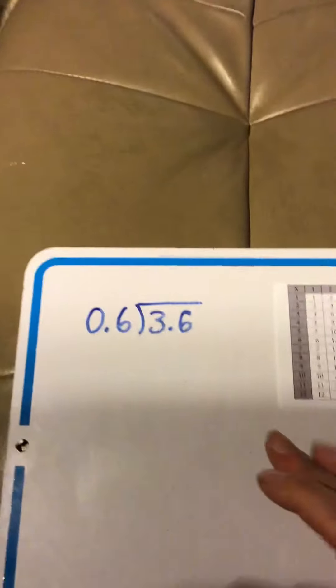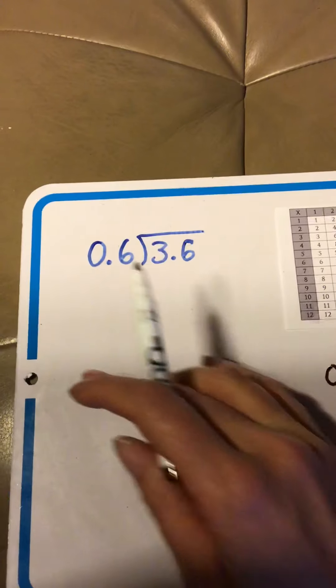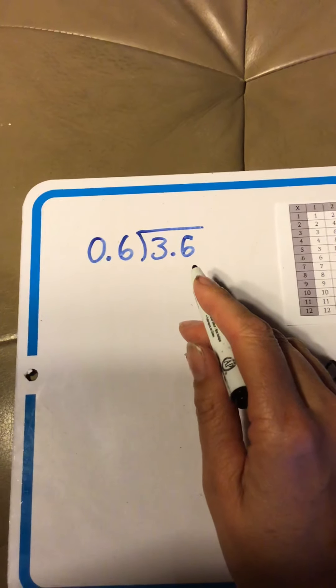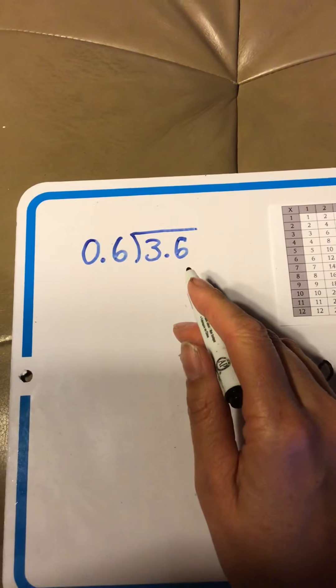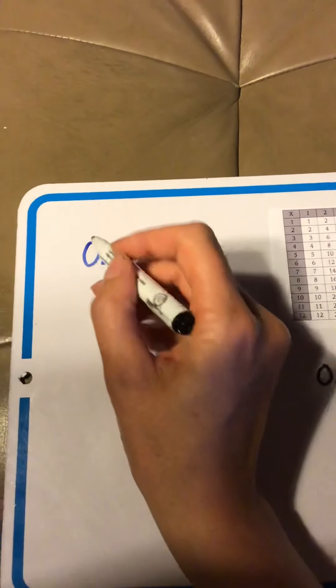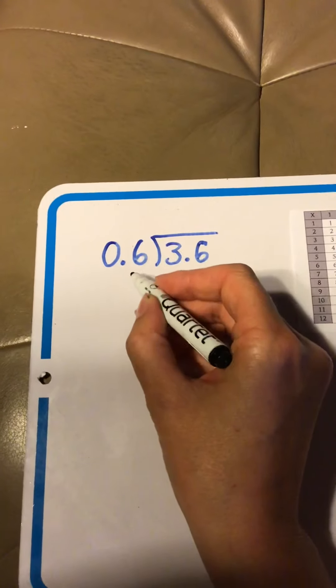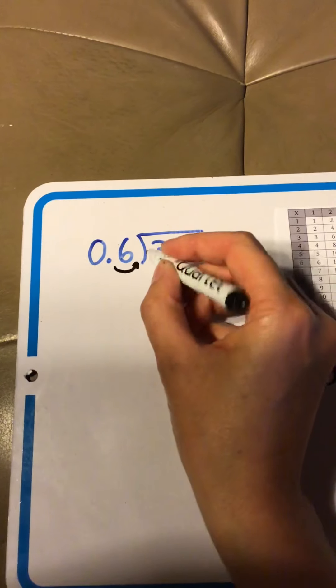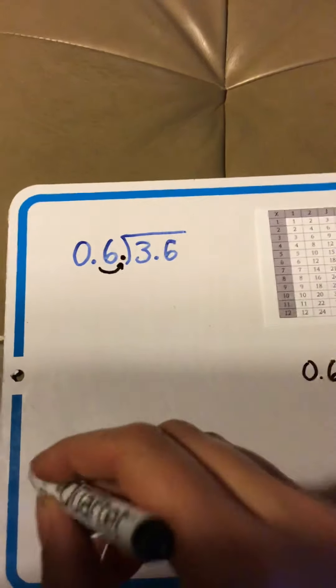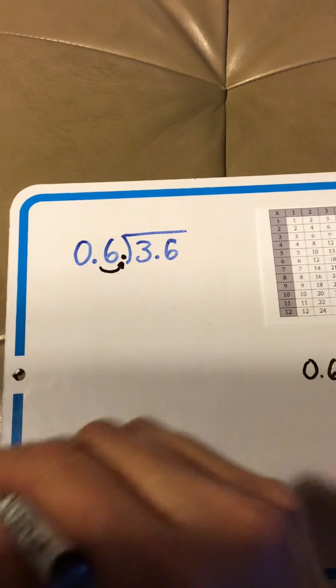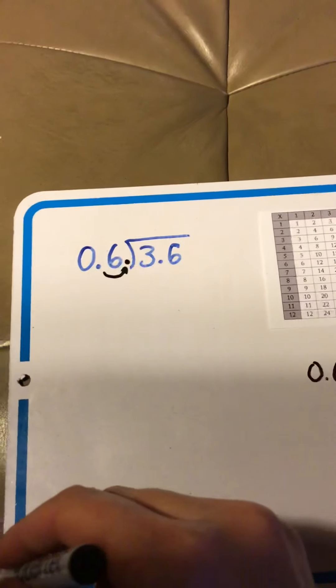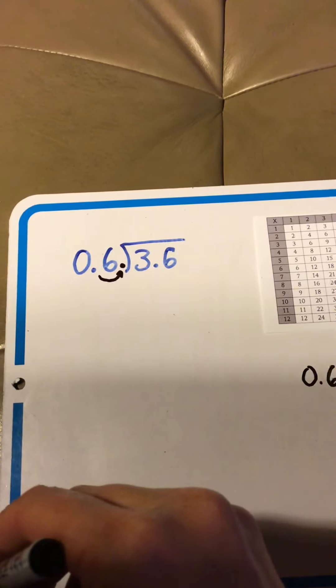But, if we change something at the door, we have to change the same thing in the house. Otherwise, it ends up being a different math problem. So, we're going to multiply the 0.6 times 10, which looks like moving the decimal point one spot over. Okay? Basically, we want to get rid of that decimal point, or at least put it in the right spot, so we're dealing with a whole number instead of a decimal number at the door.